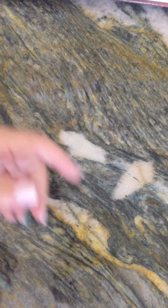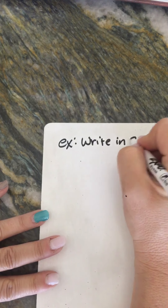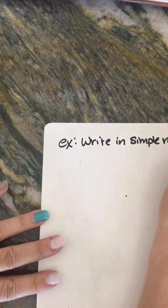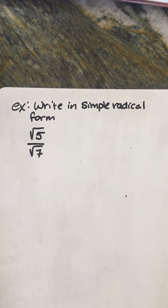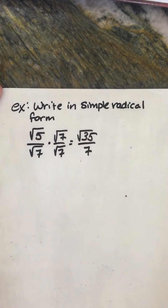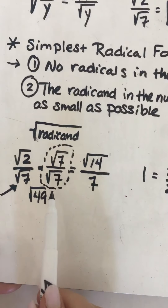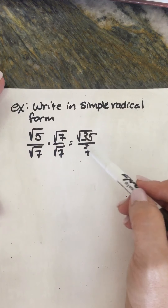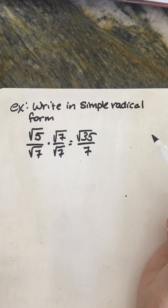Example A: Write in simplest radical form — square root of 5 over square root of 7. Give it a try. Use your math magic — multiply by square root of 7 over square root of 7, because our denominator is square root of 7. You get square root of 35 over 7. And you did not divide the 35 and the 7, because that's not a 35 — that's a square root of 35. Hopefully everyone's eyebrows are still attached to their faces.